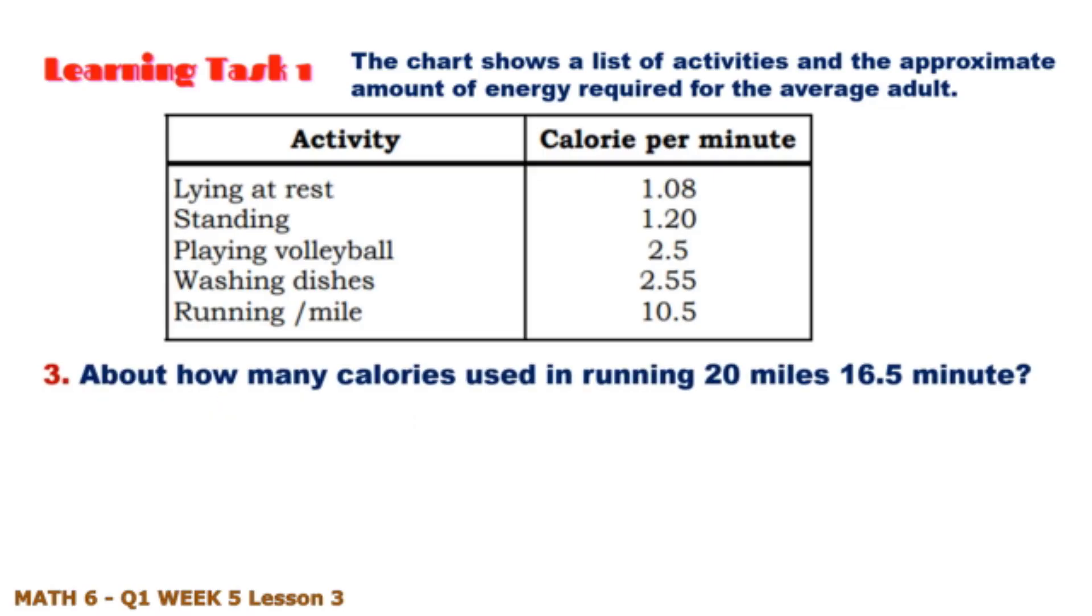Number three: About how many calories used in running 20 miles? Just multiply 10.5 times 16.5 and that is 3,465.